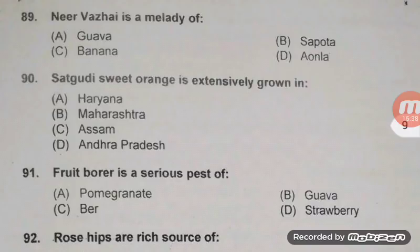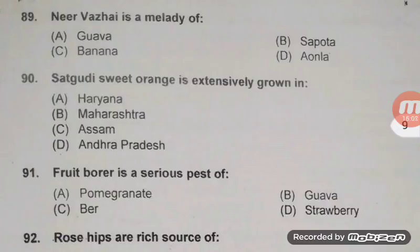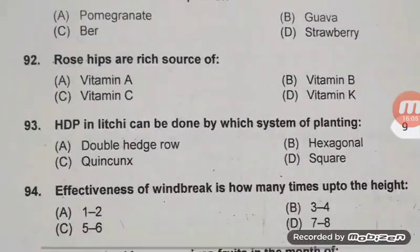Near vagai is a malady of banana — right answer C; major symptom is unfilled fingers. Sadhgudi sweet orange is extensively grown in Andhra Pradesh — very common question. Fruit borer is a serious pest of pomegranate, also known as pomegranate butterfly — Virachola isocrates. Right answer A.